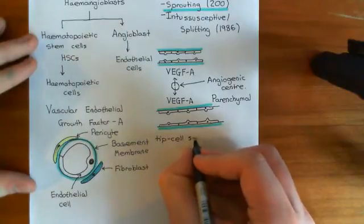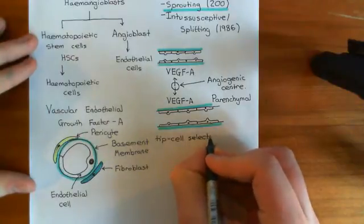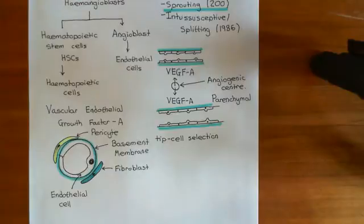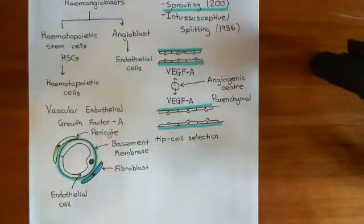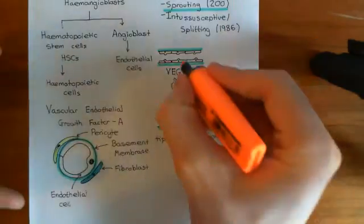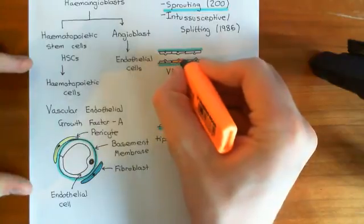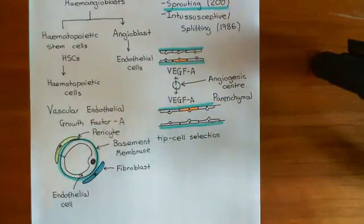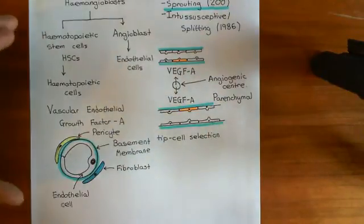When you produce a sprout from these capillaries, at the tip of that sprout there will be one cell which is very specialised, and is specialised to guide the sprout towards the angiogenic centre. This is known as the tip cell, and there is only one. So firstly, what you have to do is decide upon your tip cell. These two are going to become our tip cells — the ones that receive the biggest dose of vascular endothelial growth factor A.